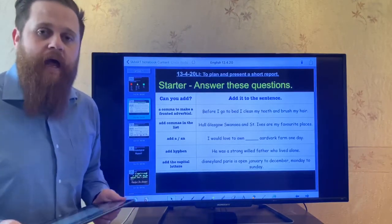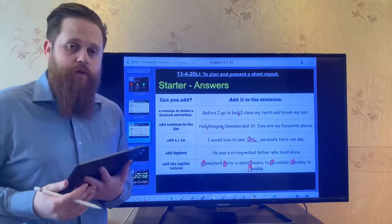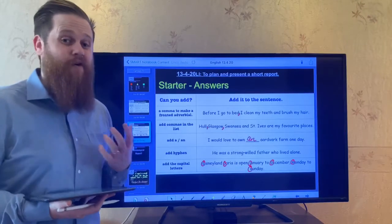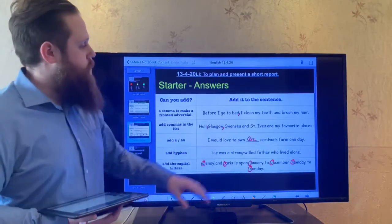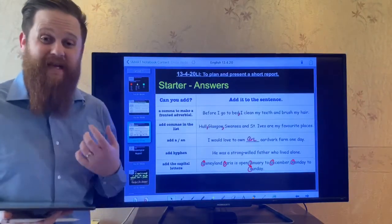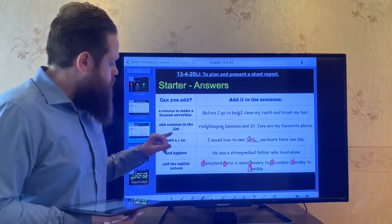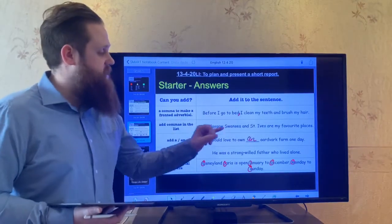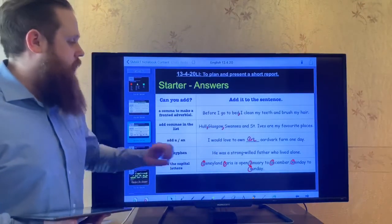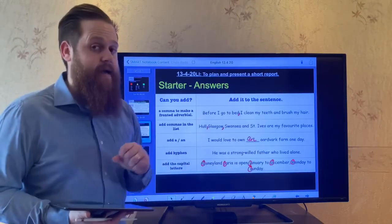Right, okay then. I hope you've got all of these completed by now, and here are your answers. To add the comma to make a fronted adverbial, before I go to bed, comma, because we could take this away, and I'll clean my teeth and brush my hair is the main clause. It would still make sense on its own. It's strong enough. This is obviously giving us some more information. Add commas to the list. Well, these place names are the list, so make sure you've got a comma here and here. Add a or an to this sentence. Remember, it's a vowel sound here, so it's going to be an.